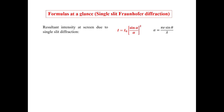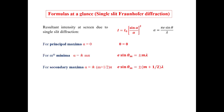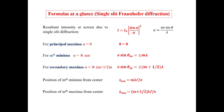This is the intensity at the screen due to single slit diffraction. These are the conditions for principal maxima, mth minima, and secondary maxima. For principal maxima, theta is 0. For mth minima, e sin(theta_m) = ±m*lambda, where m is a natural number. For secondary maxima, e sin(theta_m) = ±(m + 1/2)*lambda. These are the positions of mth minima and mth secondary maxima from the center.